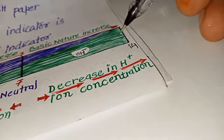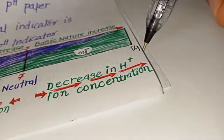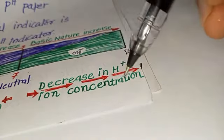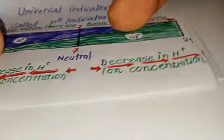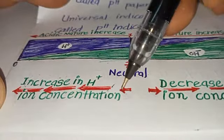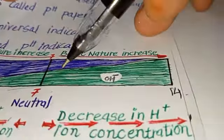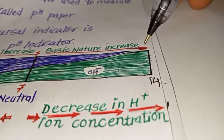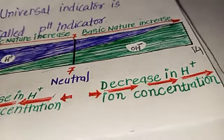When pH is 14, the OH- ion concentration is at its maximum. Moving from pH 7 to pH 14, there is a decrease in H+ ion concentration. Moving from pH 7 toward pH 0, there is an increase in H+ ion concentration. The portion from 7 to 0 represents the acidic nature, while the portion from 7 to 14 represents the basic nature of a solution.